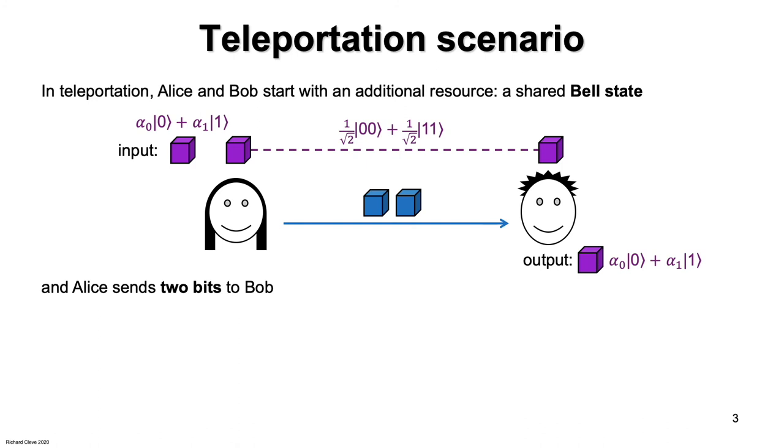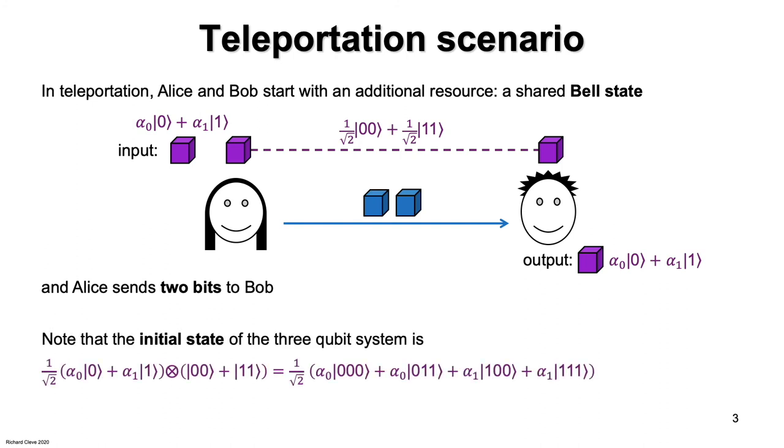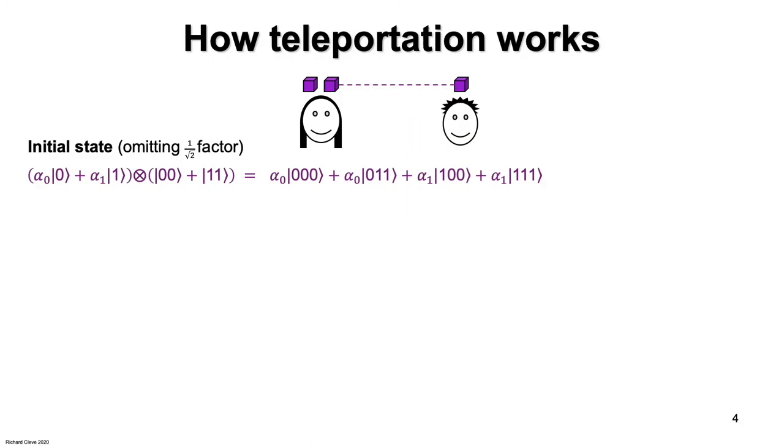And let's analyze how teleportation works. To begin with, the initial state of the three qubit system is the following. It's a tensor product of Alice's state with the bell state. And if we expand the tensor product, then it's the sum of four terms. It's an eight-dimensional vector, because there are three qubits involved. Here, I've just recopied the state. It's that eight-dimensional vector. And I've omitted the one over root two factor, just to reduce clutter.